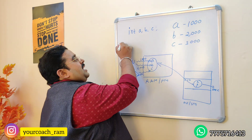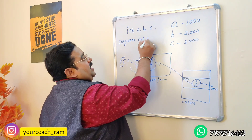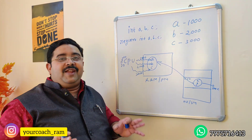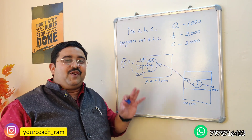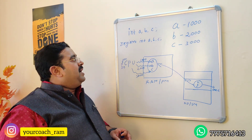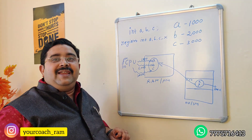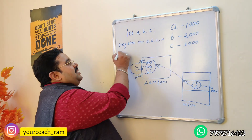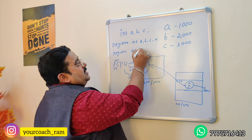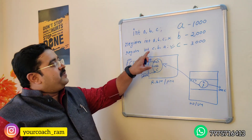Instead of storing variables A, B, C in RAM, if you store them in CPU registers, accessing will be fast. So one student in the interview hall declared using the keyword 'register': 'register int a, b, c;' Most students think the register keyword doesn't exist, but there is definitely a keyword called 'register' in C language — it is one of the 32 keywords. But they still didn't select that student.